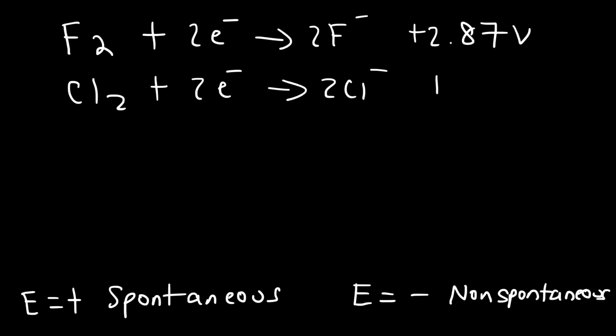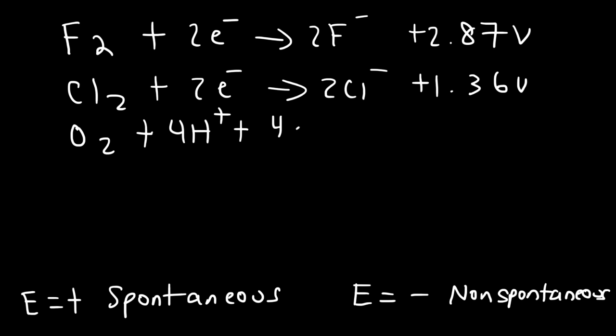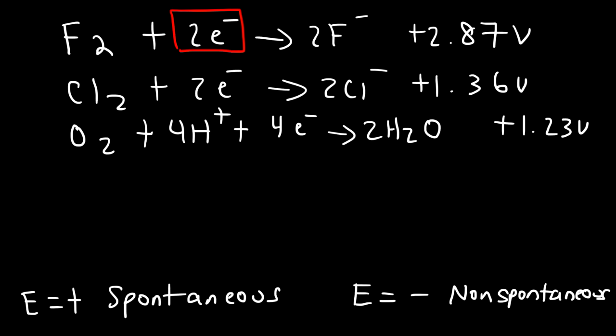The cell potential for chlorine is 1.36 volts. For oxygen, in the presence of acid, oxygen will acquire electrons and turn into water, and the cell potential is 1.23 volts. Whenever you have a half reaction where the electrons are on the left side, it's always a reduction half reaction. If you look at the table for standard reduction potentials, all of the half reactions have electrons on the left side because it's reduction.